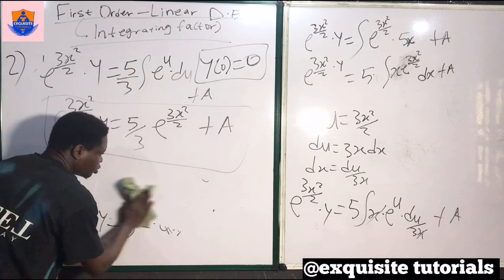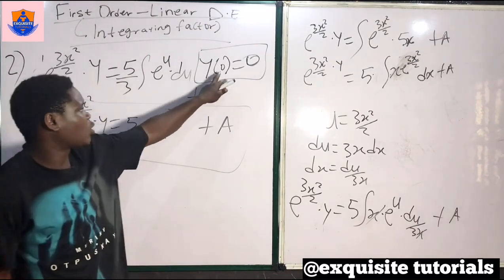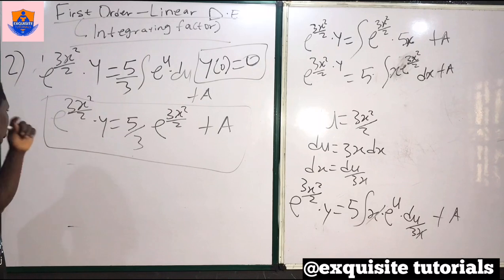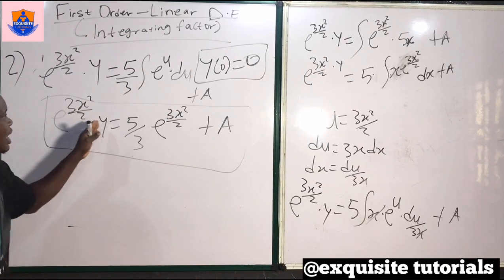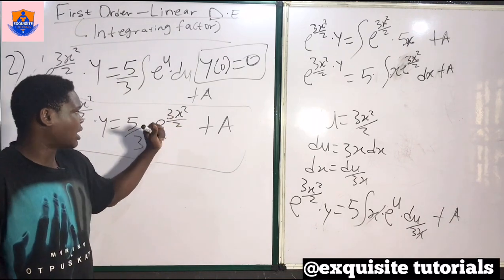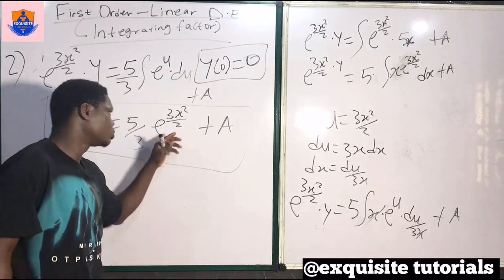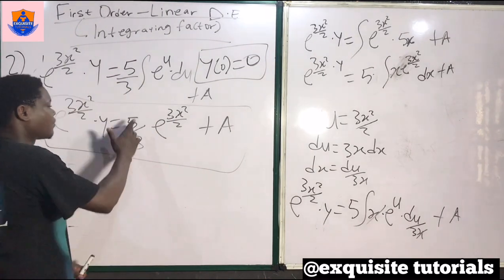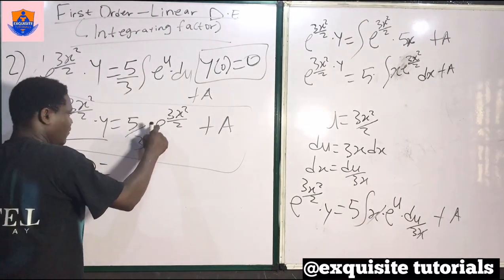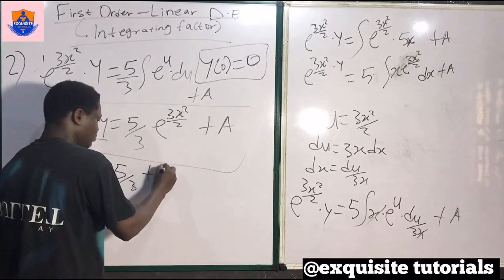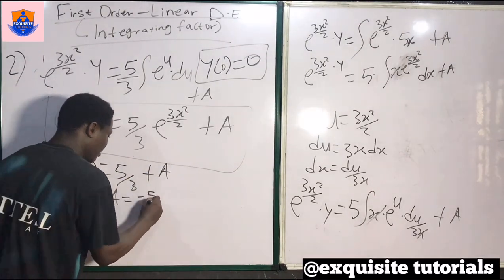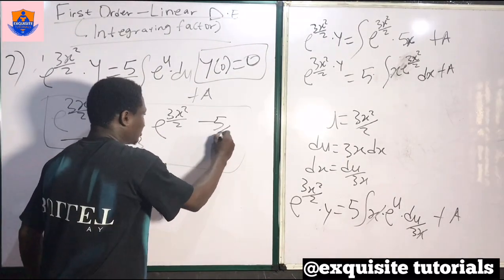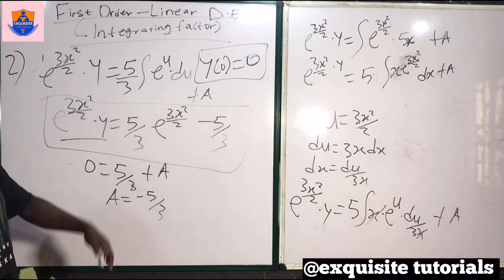We are given the initial condition: at x equals 0, y equals 0. When x is 0, e^(3·0²/2) equals e^0 equals 1. So 1 times 0 equals 0 on the left. On the right, e^(3·0²/2) equals 1, so we get 0 equals 5 over 3 times 1 plus a. Therefore a equals minus 5 over 3. Replacing plus a with minus 5 over 3 gives us the particular solution.